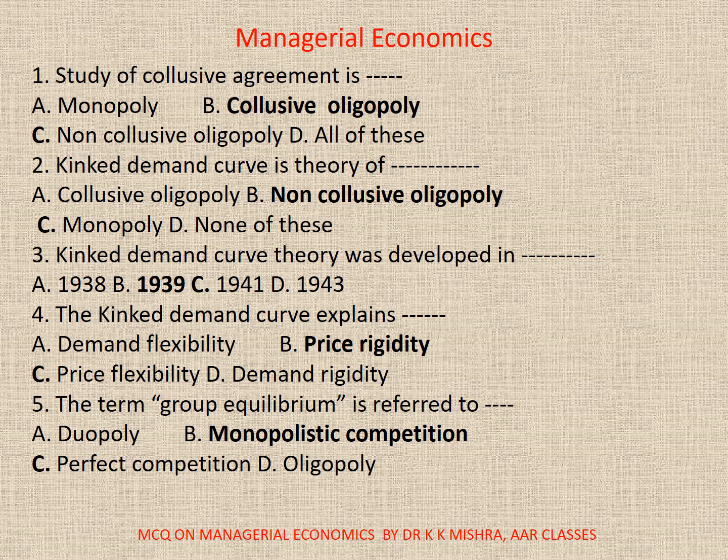5. The term Group Equilibrium is referred to: A. Duopoly, B. Monopolistic Competition, C. Perfect Competition, D. Oligopoly. Correct option is B. Monopolistic Competition.